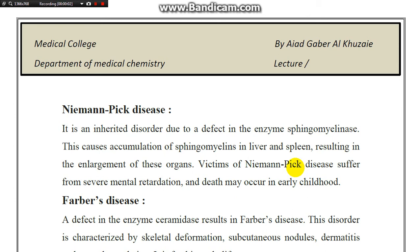Niemann-Pick disease is a hereditary disorder due to a defect in the enzyme sphingomyelinase. This causes accumulation of sphingomyelin in the liver and spleen, resulting in the enlargement of these organs. Patients with Niemann-Pick disease suffer severe mental retardation, and death may occur in early childhood.